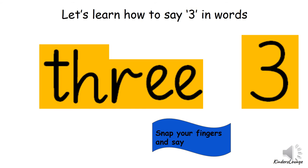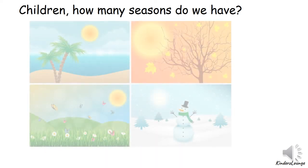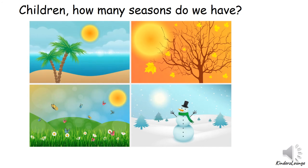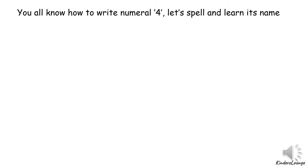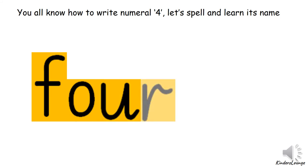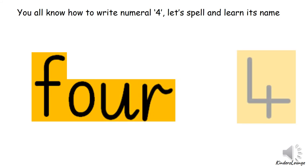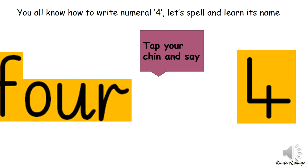What's the number that comes after three? How many seasons do we have? The answer is quick — we have four seasons! So the number after three is number four. Now let's spell and learn its name in words: F O U R — four. Tap your chin and say F O U R, four. Wonderful! That's how we spell number four.